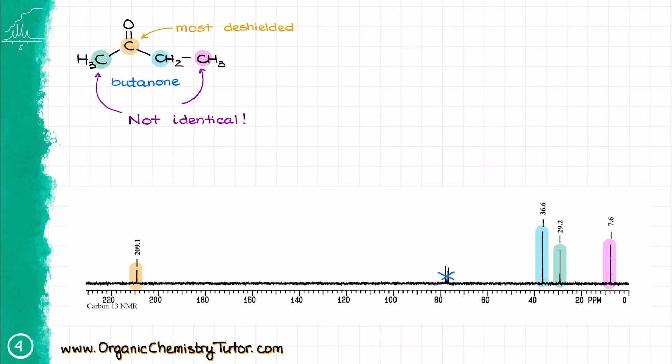Now, when it comes to the position of our signals in the spectrum, the carbon of the carbonyl is at 209 ppm because that carbon is directly connected to the electronegative oxygen, while at the same time, the pink carbon is the least deshielded or most upfield, if you like, because it is the furthest away from the oxygen.